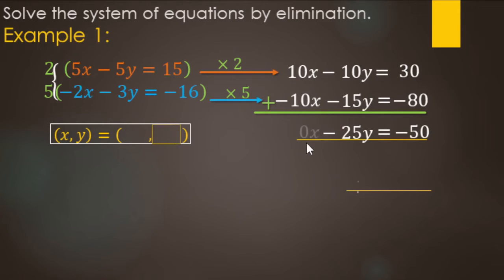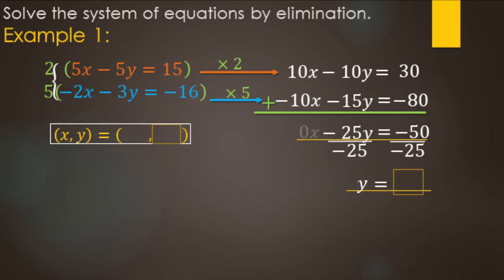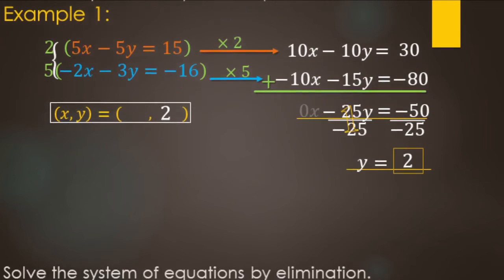The x's were eliminated, so now solve for y. Divide both sides by negative 25. Negative divided by negative is positive: 50 divided by 25 is 2. So the y value of the solution is 2. Next, find x.